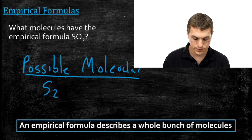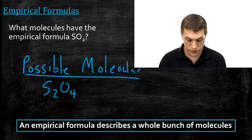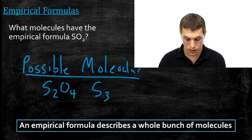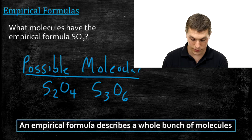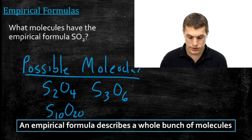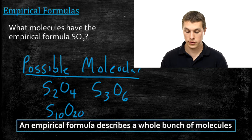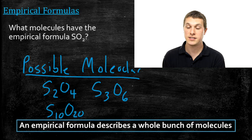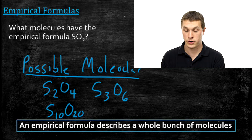For example, I could have two sulfurs and four oxygens — that's the same ratio as one sulfur to two oxygens. Or I could have S3O6, again twice as many oxygens as sulfur. You could even have S10O20. So the empirical formula corresponds to many different molecular formulas — it's not a specific molecule. It's just telling you that in your sample, the ratio of elements is one sulfur for every two oxygens.